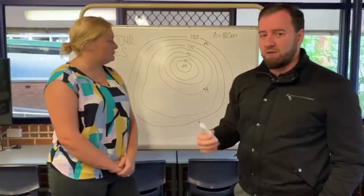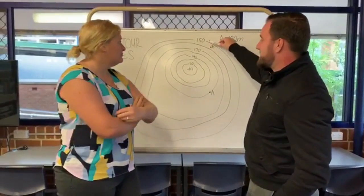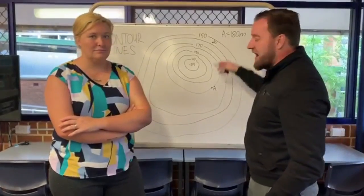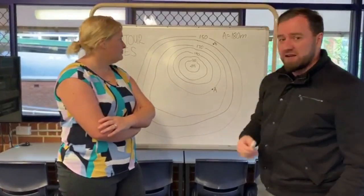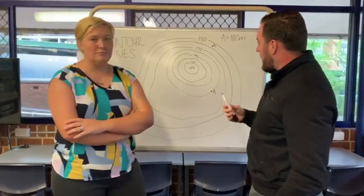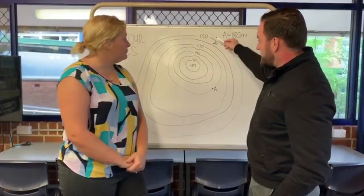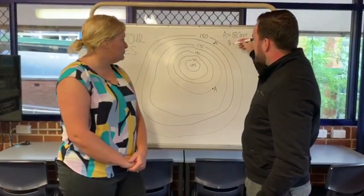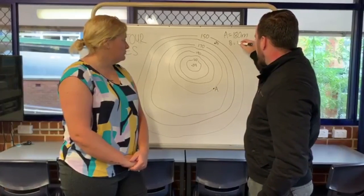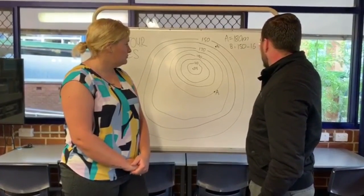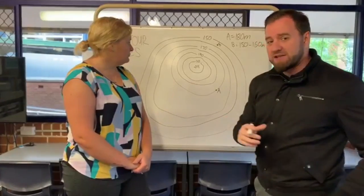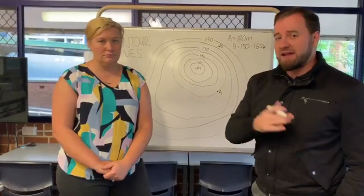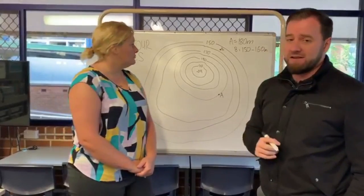But what about point B? We can see clearly that it's between the 150 and the 160 meter line. But even though it's about halfway in the middle, it doesn't mean that it's 155. The only way to answer this is a range. All we can say is that point B is between 150 and 160. You can also write that it is greater than 150 or less than 160. We don't have any other information, so we cannot be more specific than that.